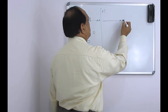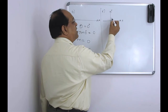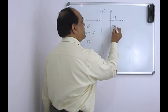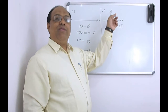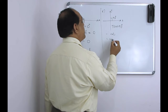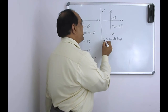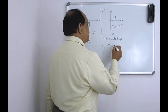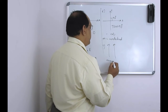Let us see the slope of the y-axis. The y-axis makes an angle of 90 degrees with the x-axis. Therefore, the slope is tan 90, which is infinity — also known as undefined. So the slope of the y-axis is undefined, and similarly, the slope of any vertical line is also undefined, represented by infinity.